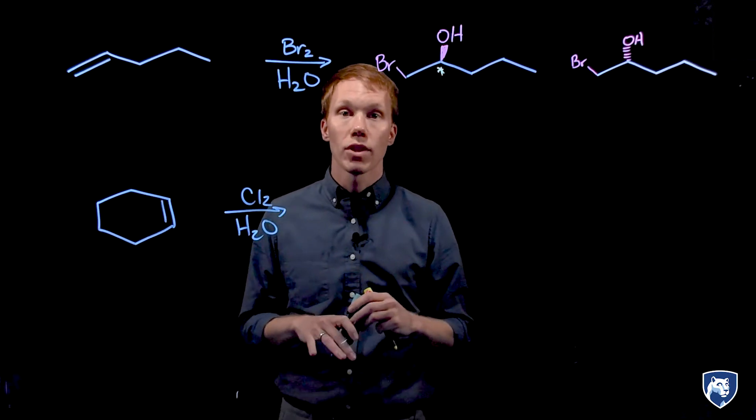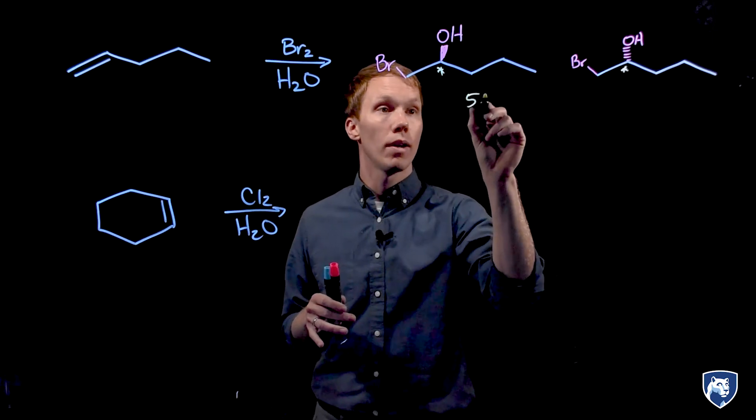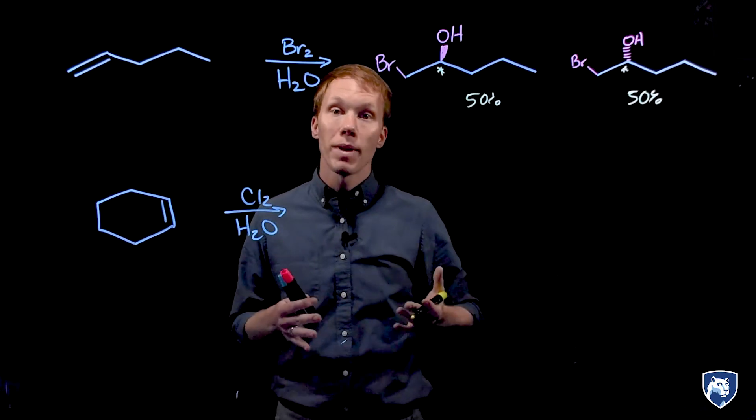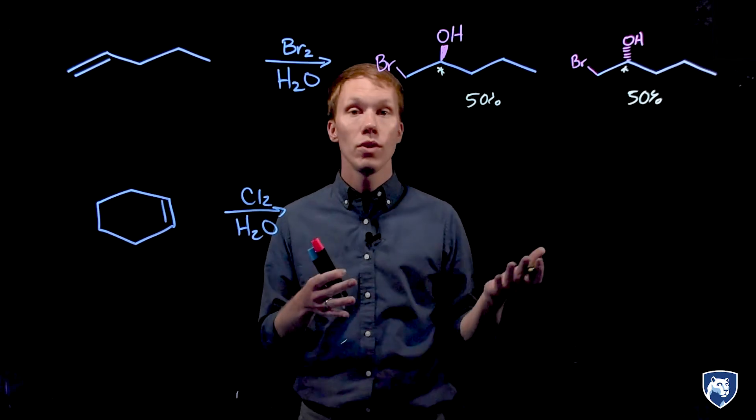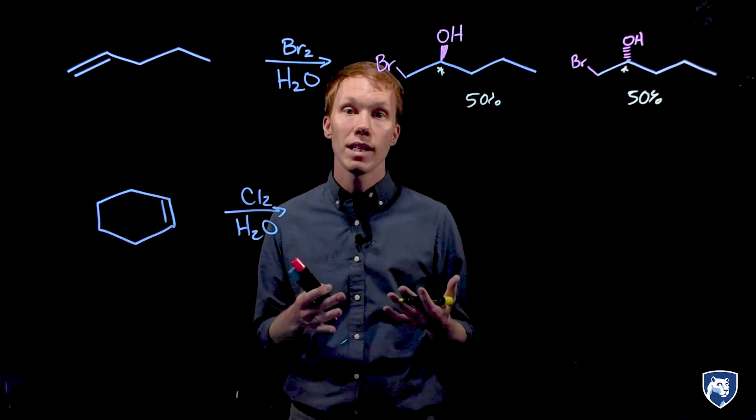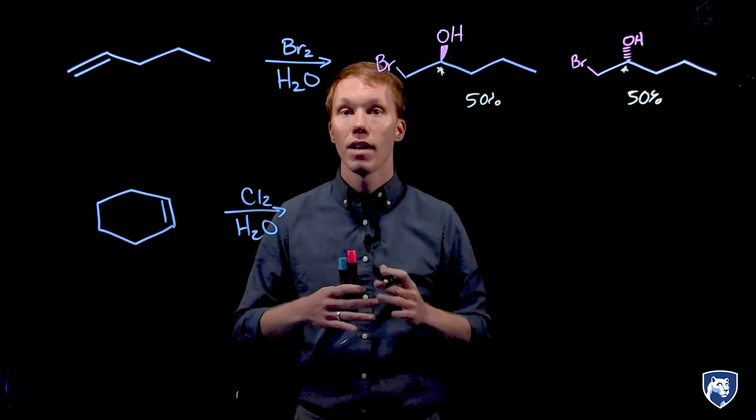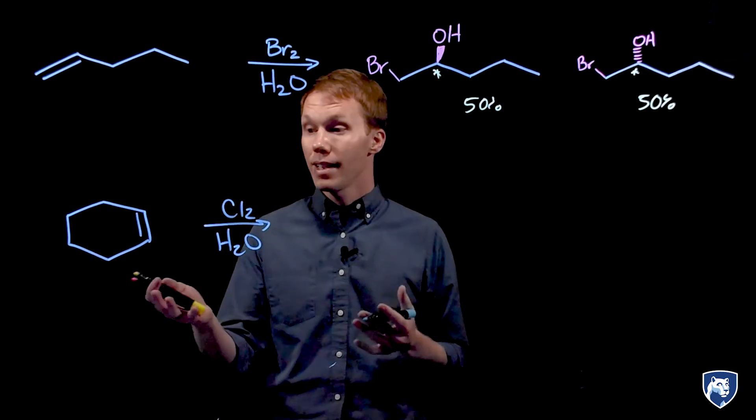When we analyze our product mixture we find that these two products are produced in equal amounts. Equal mixture of enantiomers is known as racemic, and because there are two possible stereoisomers that have been produced in equal amounts, this example of the halohydrin synthesis is not stereoselective.